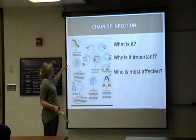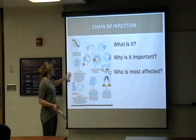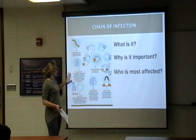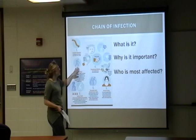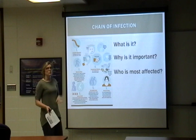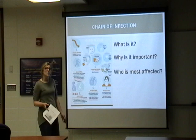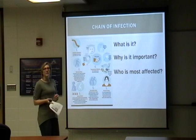The second link is the reservoir host — the individual, plant, animal, or soil that carries that bacteria. The third is the portal of exit, where that bacteria leaves the host to reinfect another. The fourth link is the transmission method — how it travels to a new host. The fifth link is the portal of entry, similar to the portal of exit, where it can be transmitted through any body opening: eyes, ears, mouth, or breaks in the skin.